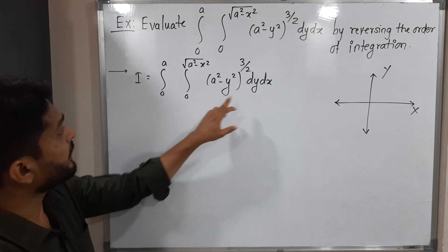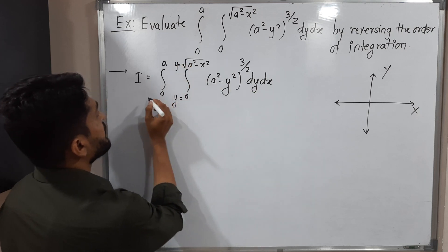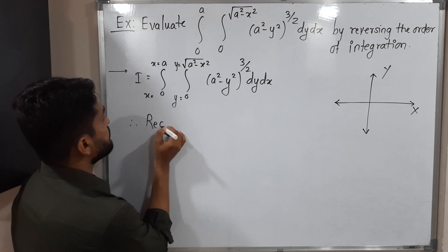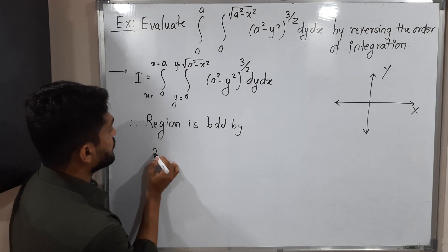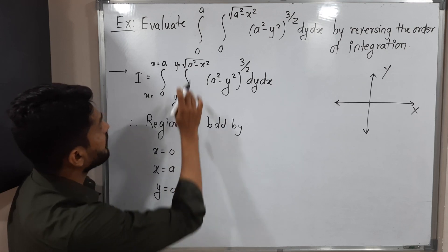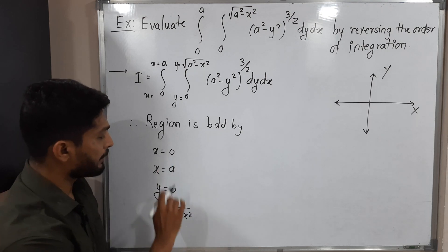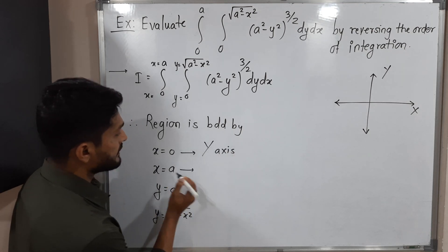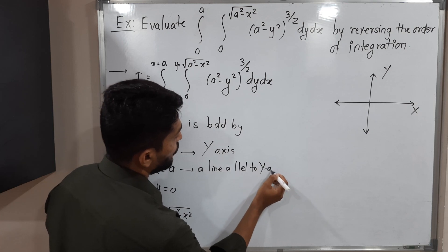The inner integration is with respect to y, so these are the limits of y. The outer integration is with respect to x, so these are the limits of x. Therefore, the region is bounded by x=0, x=a, y=0, and y=√(a²−x²). The region is bounded by these four curves: x=0 is the y-axis, and x=a is a line parallel to the y-axis.